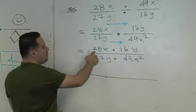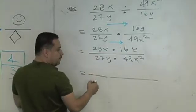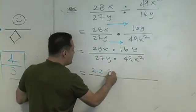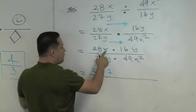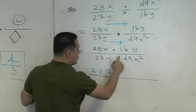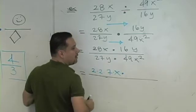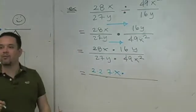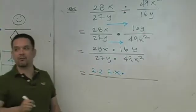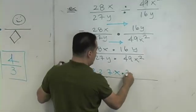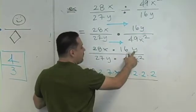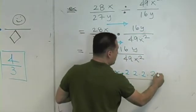How do you factor 28? 4 times 7, or 2 times 2 times 7 — and don't forget there's an x there. Now 16: how many 2's multiply together to get 16? Four 2's — 2 times 2 times 2 times 2 — and don't forget you have a y.